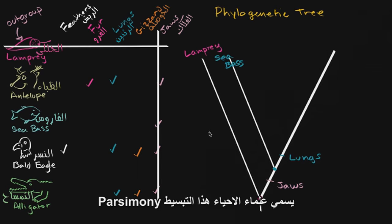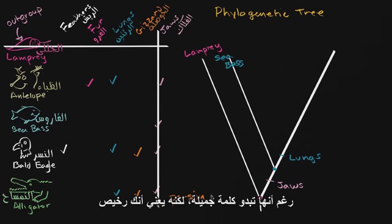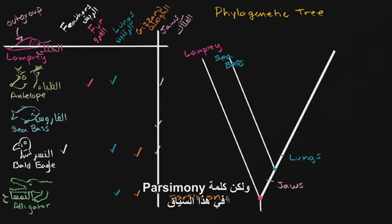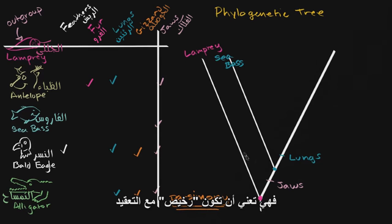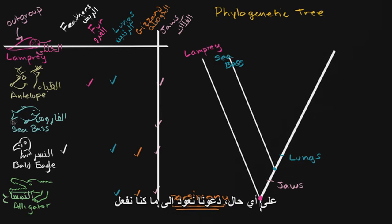This is a property that biologists often call parsimony. Parsimony in everyday language means cheap — if someone tells you you're parsimonious, it's a nice-sounding word but it means you are cheap. In this context, parsimony means we're trying to be cheap with complexity; we're trying to be as simple as possible in our explanation of what's going on.